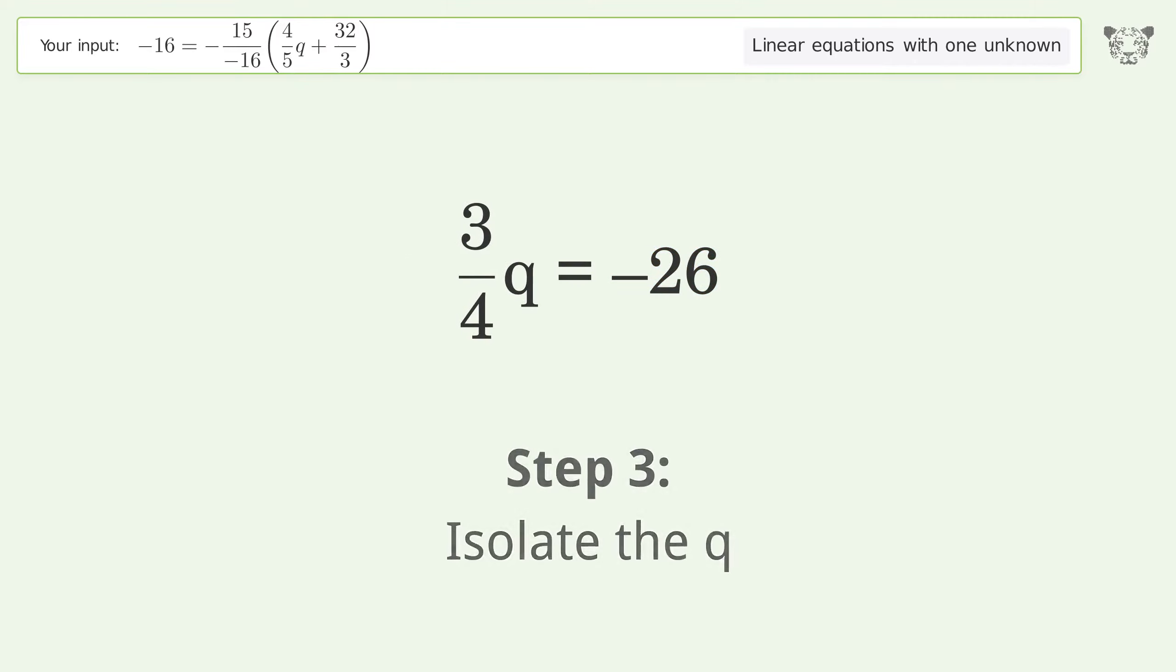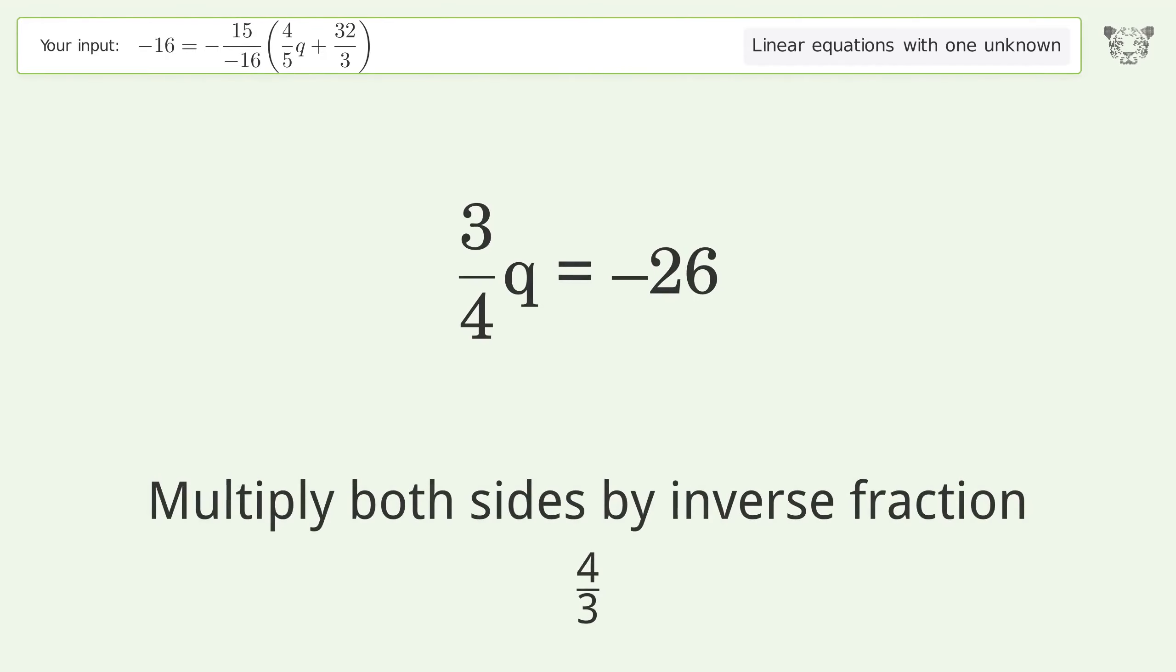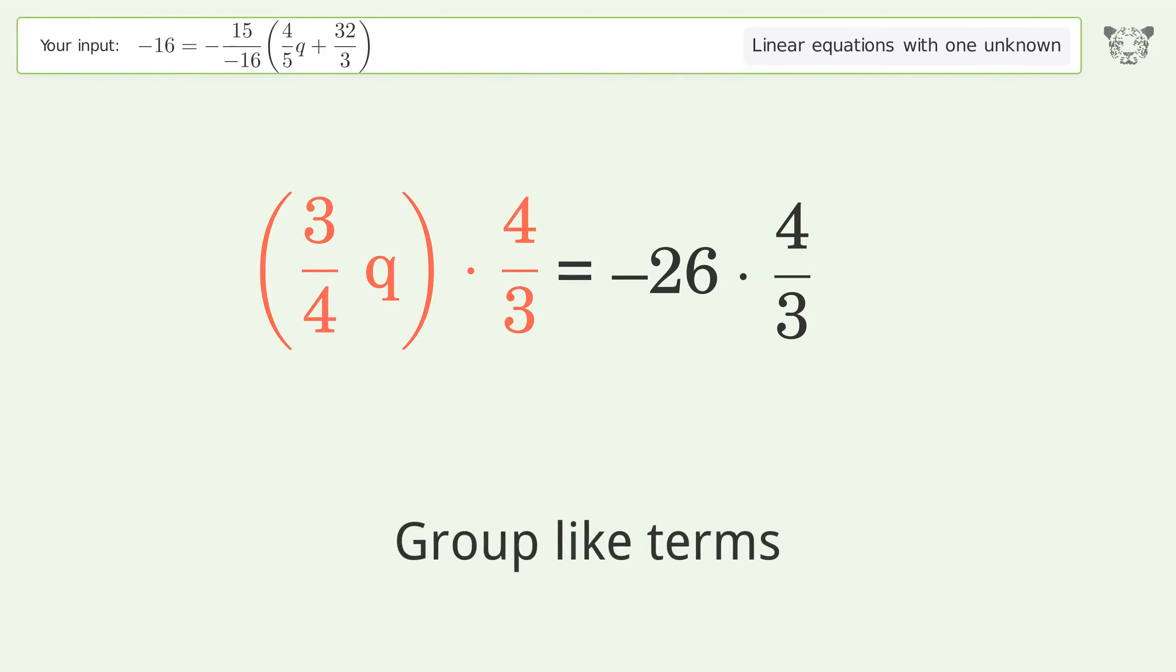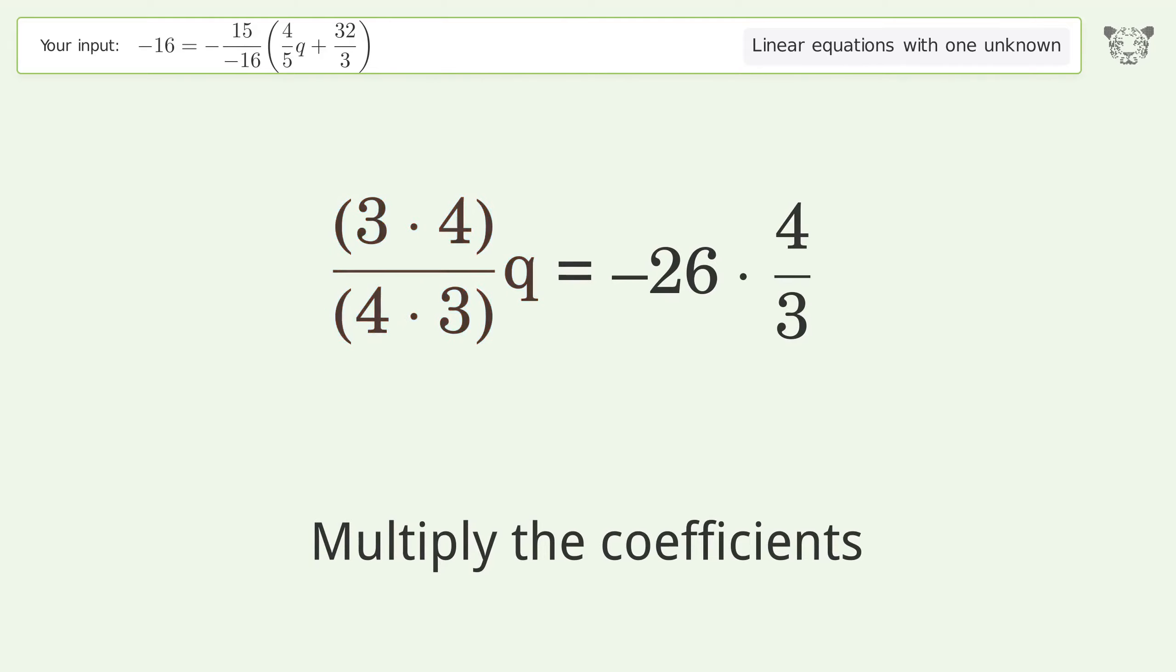Isolate the q. Multiply both sides by the inverse fraction, 4 over 3. Group like terms. Multiply the coefficients. Simplify the fraction.